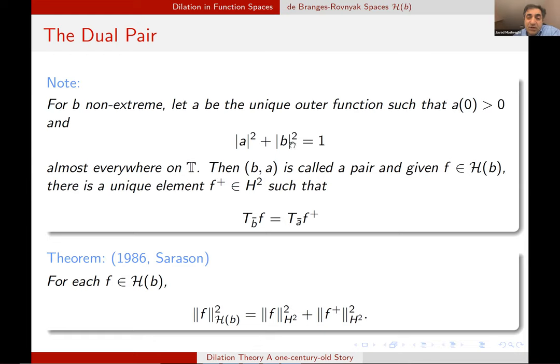In the non-extreme case, since 1 minus mod B squared is log integrable, we can define an outer function with this property, uniquely if we assume this one too. And then for each F, there is a pair called F plus with this property. Here is a great contribution of Don Sarason. Remember, it was very difficult to calculate the norm of F. And he showed that the norm of F can be obtained via the norm of F and F plus, but in H^2. So it's better because instead of going to find a preimage and then make projected onto the orthogonal complement of the kernel, we have to find F plus. And for some subclasses, it is easy to find F plus. That is why this is a useful formula. And also this formula helped us to obtain the result, even though the results are somehow disappointing.